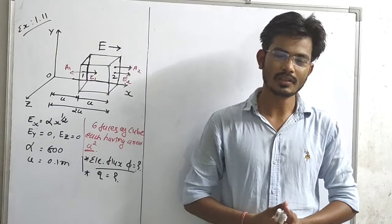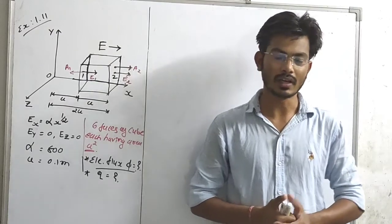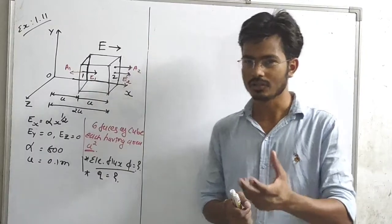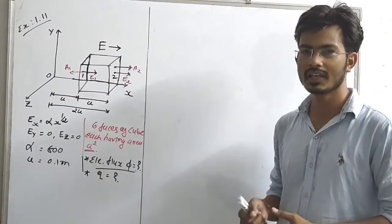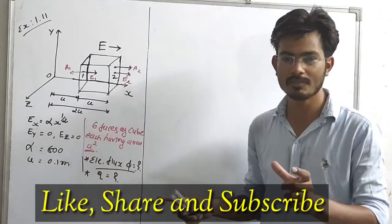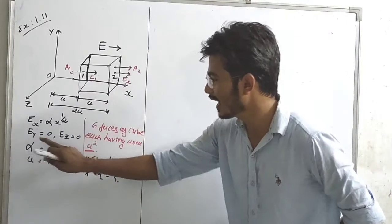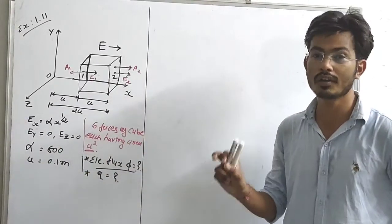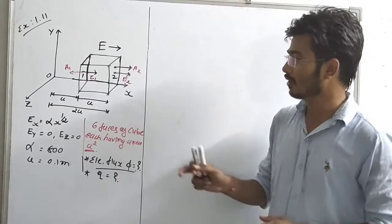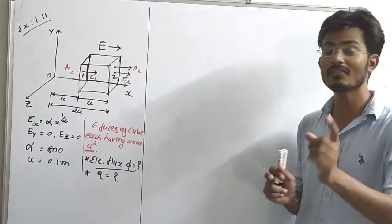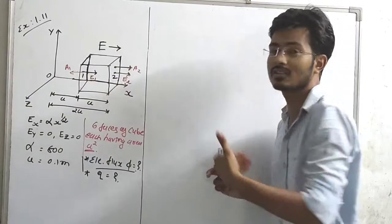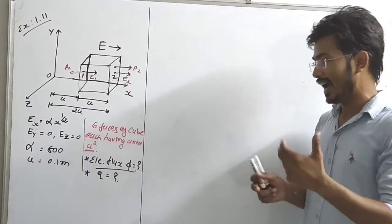In this example, we have to find out the electric flux through the cube as well as the electric charge. According to the given figure, the given data is Ex equal to alpha x raised to 1/2. Ey and Ez are equal to 0, meaning there is no electric field in the Z and Y directions — only in the X direction, as shown.